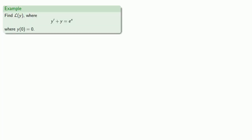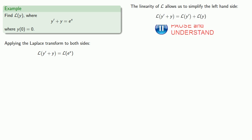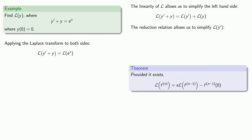For example, let's find the Laplace transform of y, where y prime plus y equals e to power x and y of 0 is equal to 0. We'll apply the Laplace transform to both sides. The linearity of the Laplace transform allows us to simplify the left-hand side — the Laplace transform of a sum is the sum of the Laplace transforms. The reduction relationship allows us to rewrite the Laplace transform of y prime as s times the Laplace transform of y minus y of 0.